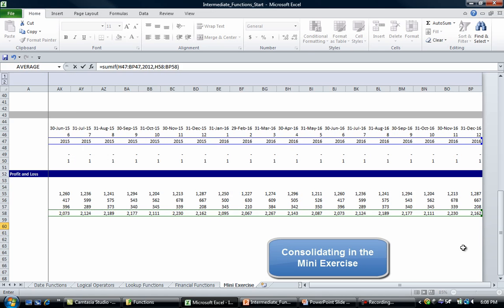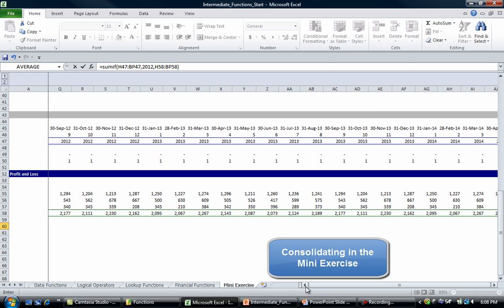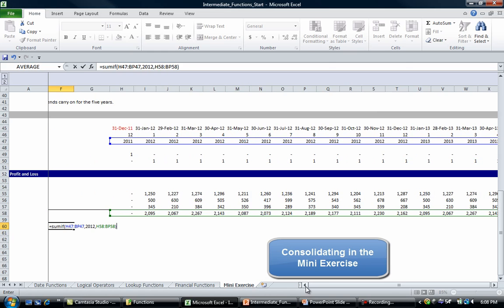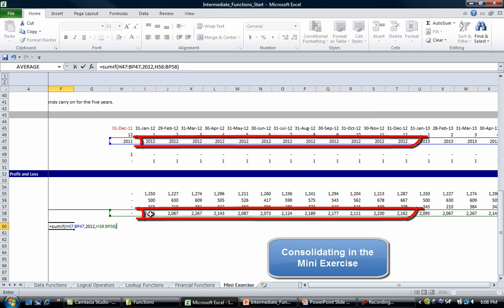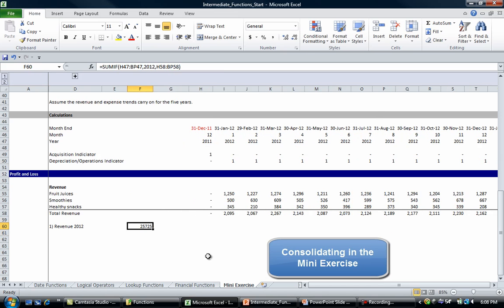What it's going to do is it's going to sum all the numbers in the sum range that have a corresponding 2012. If we have a look at that, it's going to basically take the numbers from here through to here. Enter and we get 25,725. Let's just check that, and indeed in the right bottom hand corner it's 25,725.